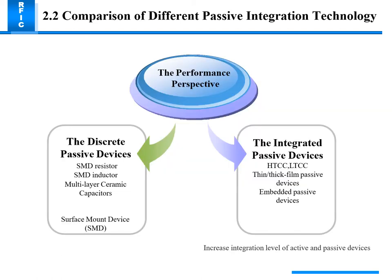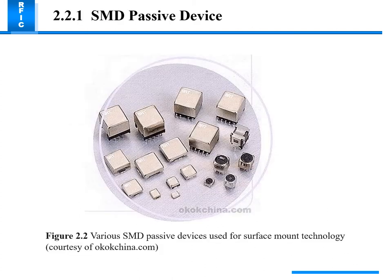A comparison of different passive integration technologies from a performance perspective shows: discrete passive devices including SMD resistors, SMD inductors, multi-layer ceramic capacitors, and surface mount devices; integrated passive devices including HTCC and LTCC with thick or thin film passive devices; and embedded passive devices. This shows the increasing integration level of active and passive devices. SMD passive devices are various types used in surface mount technology, mounted using different chemical or organic materials.